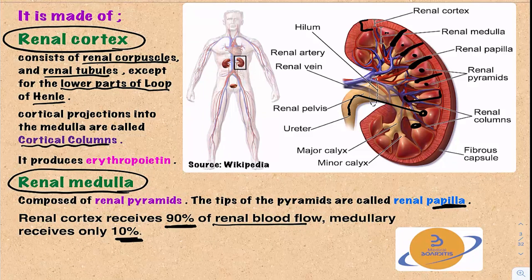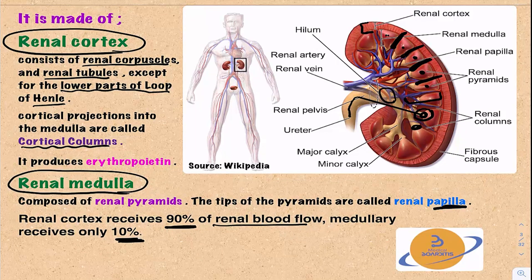The lowest area in the kidney that receives blood supply is the renal papilla, so the renal papilla is very liable to ischemia. The renal cortex also secretes erythropoietin hormone, which works on the bone marrow and stimulates it to produce red blood cells.